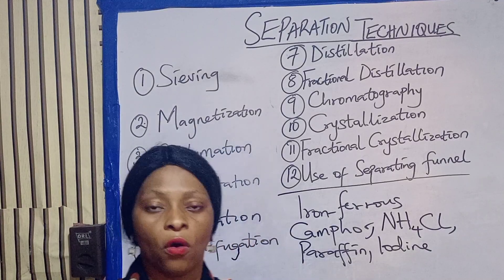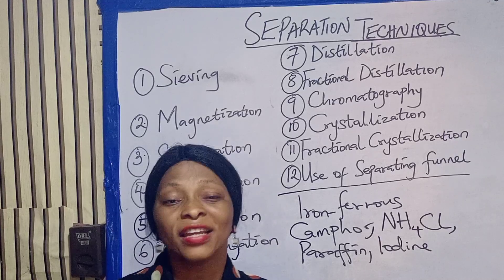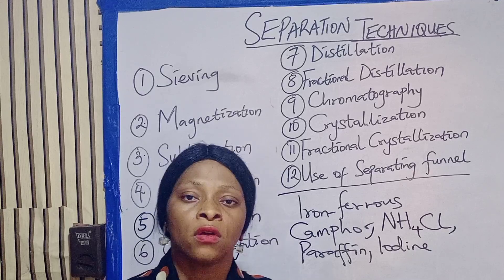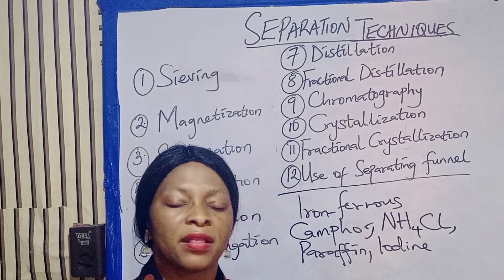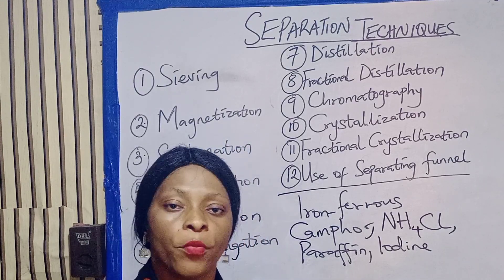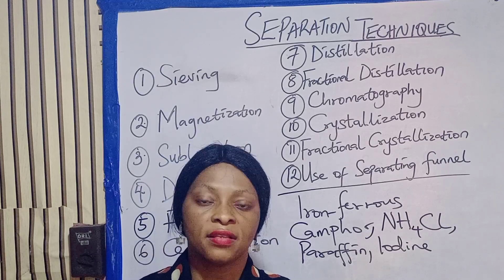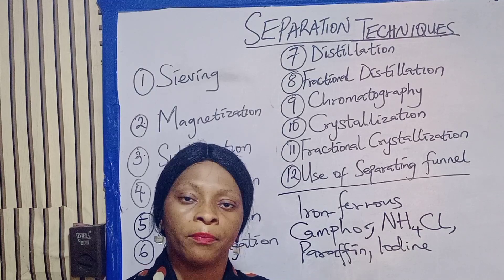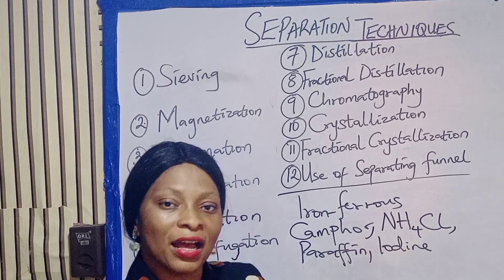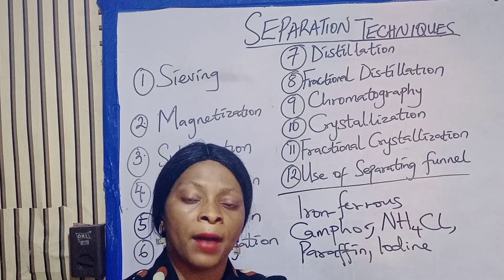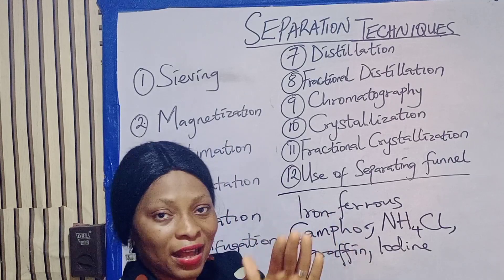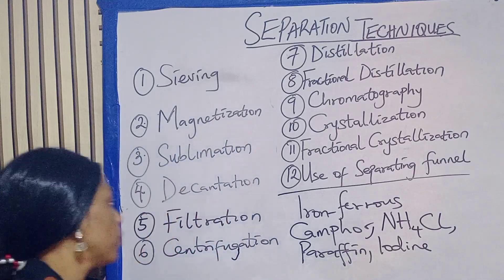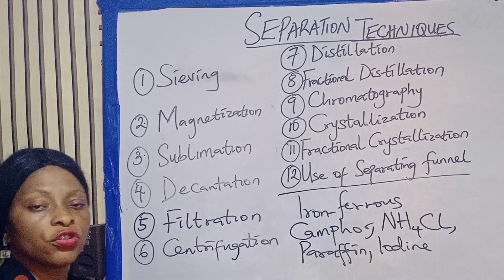Then we move to decantation. Decantation is used to separate a mixture of solid and liquid. For example, if you are preparing beans and you have particles of moi moi skin and the beans, in order to separate the moi moi skin from the beans you decant — you pour excess water so that the skins float, then you carefully pour it out. That is all referred to as decantation.